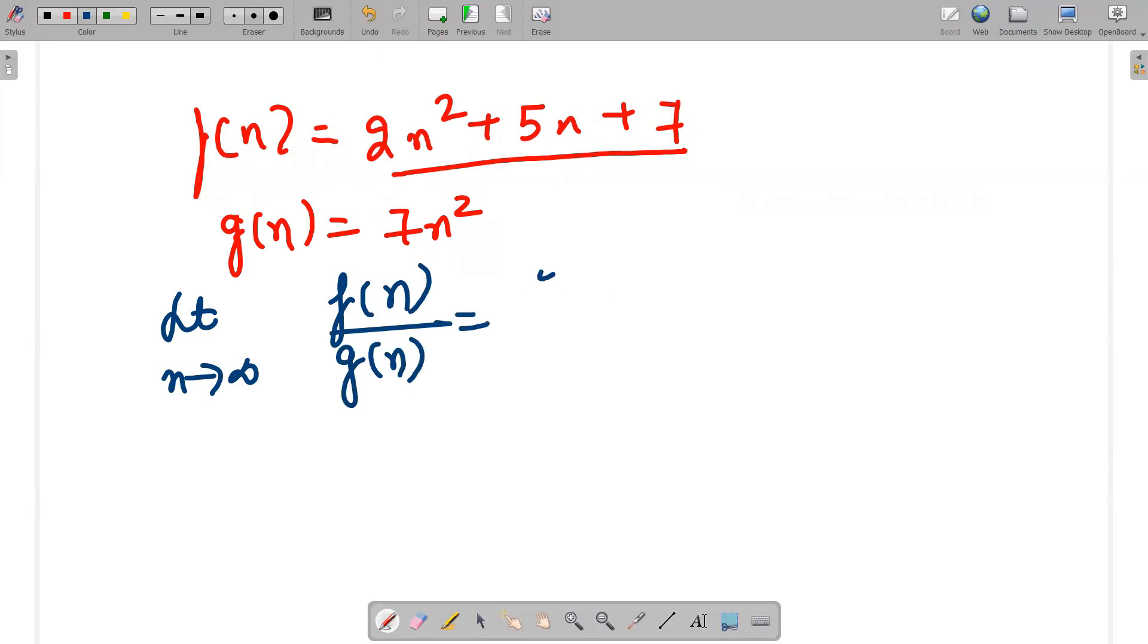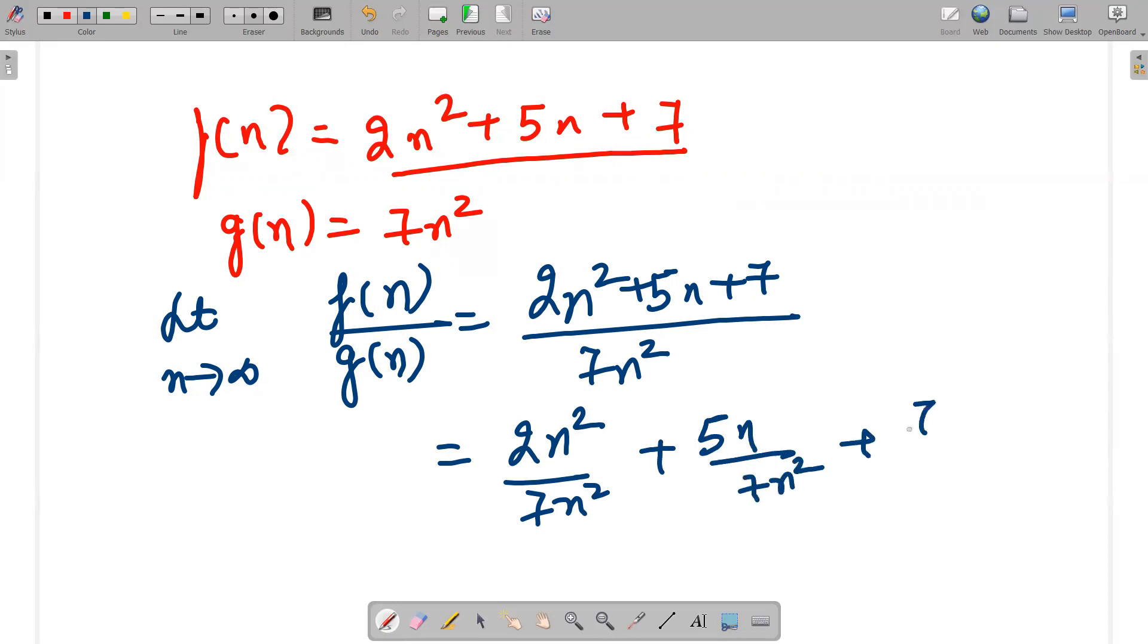g(n) would be (2n² + 5n + 7) divided by 7n². I can write it as 2n² divided by 7n² plus 5n divided by 7n² plus 7 divided by 7n². This is definitely a constant value: 2 divided by 7, plus 5 by 7n, and 1 by